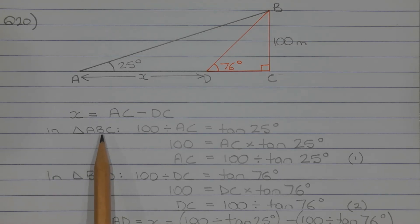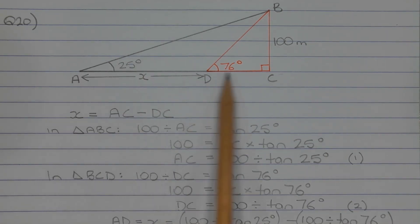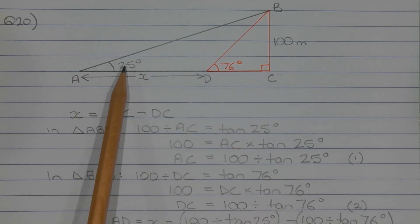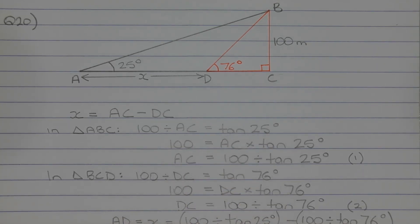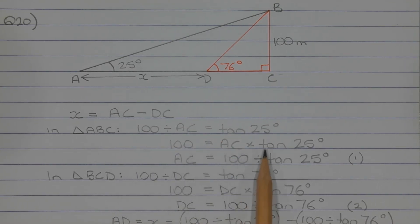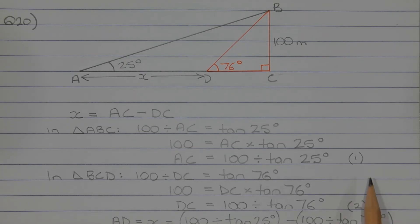In triangle ABC, we have an opposite side of 100 metres, opposite to the angle of 25 degrees. Interval AC is adjacent to this angle of 25 degrees, so we can apply the tan ratio. So, 100 divided by AC — that is opposite over adjacent — is equal to tan 25 degrees. Multiplying both sides by AC gives 100 equals AC times tan 25 degrees. Dividing both sides by tan 25 degrees, we get AC equals 100 divided by tan 25 degrees. We'll call this equation number one.